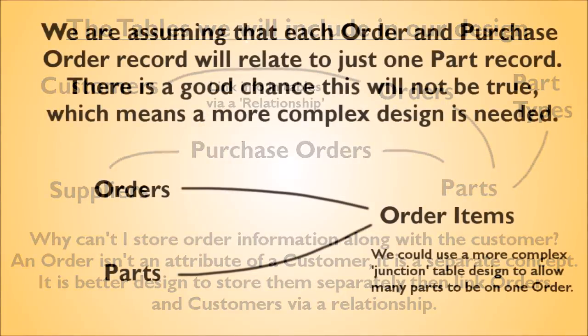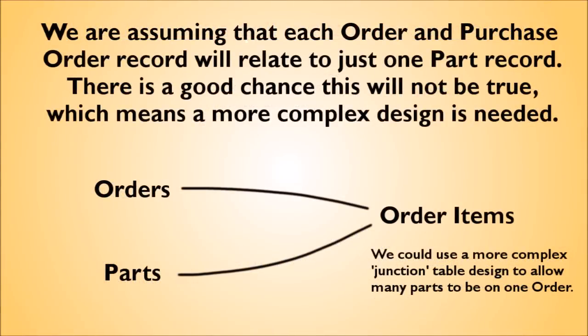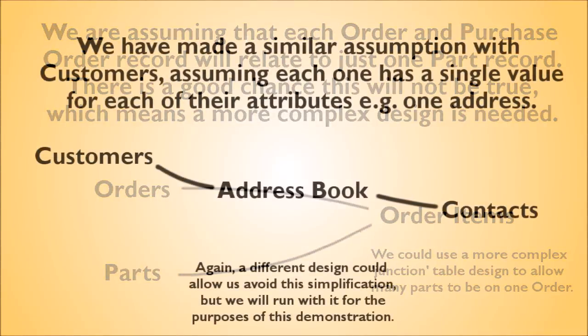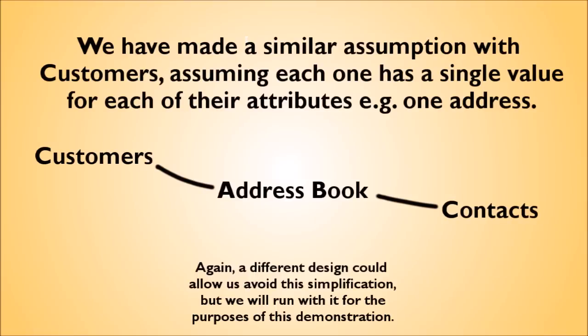To keep things simple, we're going to assume that each customer orders just one part at a time and that we order just one part from a supplier at a time. Of course this might not be true for you — your customers may order a whole selection of items together, and you will probably buy a range of items from your suppliers in one go. In this case you'll need a table that holds all the parts needed for an order, probably called order items. For large business customers with multiple addresses or phone numbers, you would perhaps need a more advanced set of tables, but we'll just show the simple way for now.